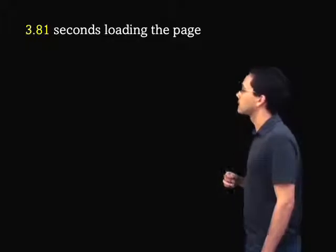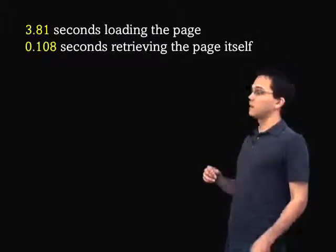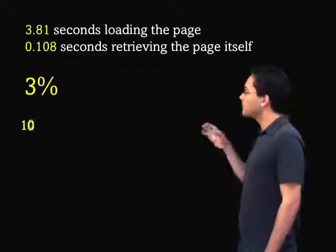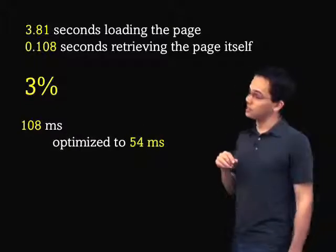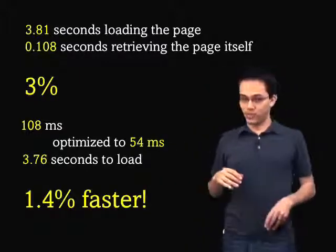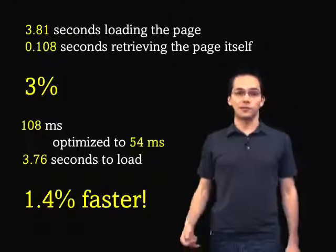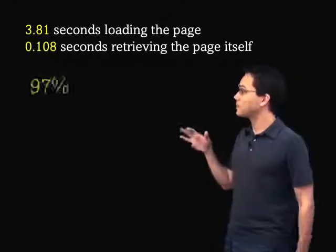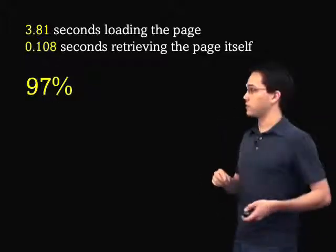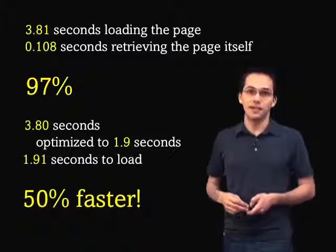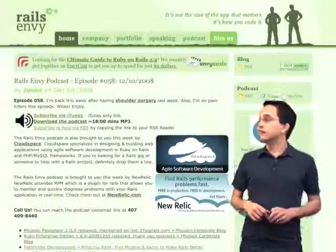Now that you know how to measure page responsiveness, let's look at the numbers. It took 3.81 seconds to load RailsMV.com, and 0.108 of those seconds was that first initial page request, which amounts to about 3% of the total. If we did some server-side optimization and took that 108 milliseconds down to 54 milliseconds, the page would take 3.76 seconds to load — only 1.4% faster. That's not worth spending a week on. If instead we focus on optimizing the 97% that it actually takes after that first request, maybe we can take that 3.8 seconds down to 1.9 seconds, making the page about 50% faster. So obviously the best way to optimize this website is to improve the browser load time.